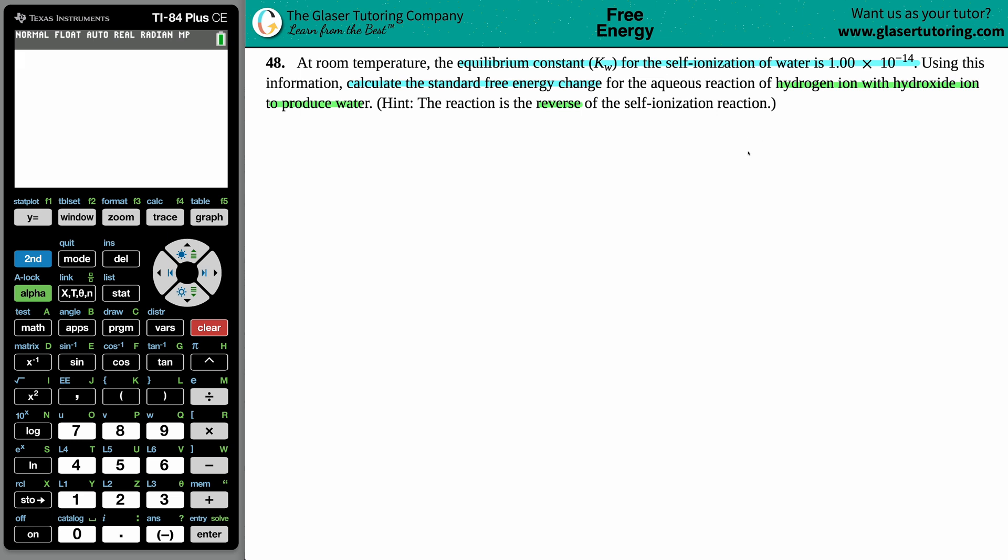Okay, so let's start from there. They told us that whatever they're describing here, hydrogen ion with hydroxide ion to produce water, this is the reverse of what they described before, that self-ionization. So we want to find the standard free energy change for this reaction. Now, keep in mind that hydrogen ion is the same thing as saying hydronium, right? Hydronium ion and hydrogen ion.